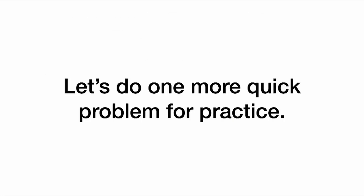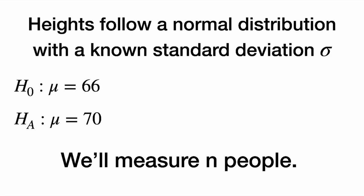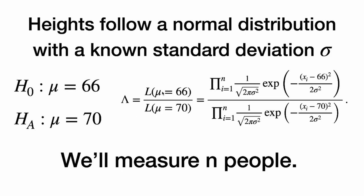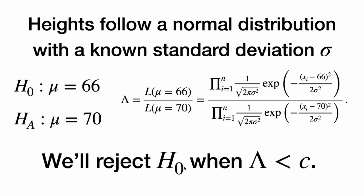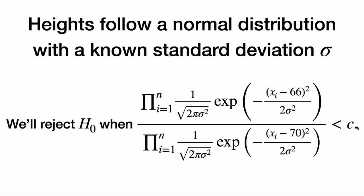Let's do one more quick problem for practice. Suppose that human heights follow a normal distribution with a known standard deviation sigma. We want to test the null hypothesis that the average height is 66 inches versus the alternative that the average height is 70 inches, and we're going to measure n people. We have our likelihood ratio — the likelihood of the null over the likelihood of the alternative — and each of these is a product of the normal density function. We reject the null hypothesis when this likelihood ratio lambda is less than some number C, and now we want to simplify.